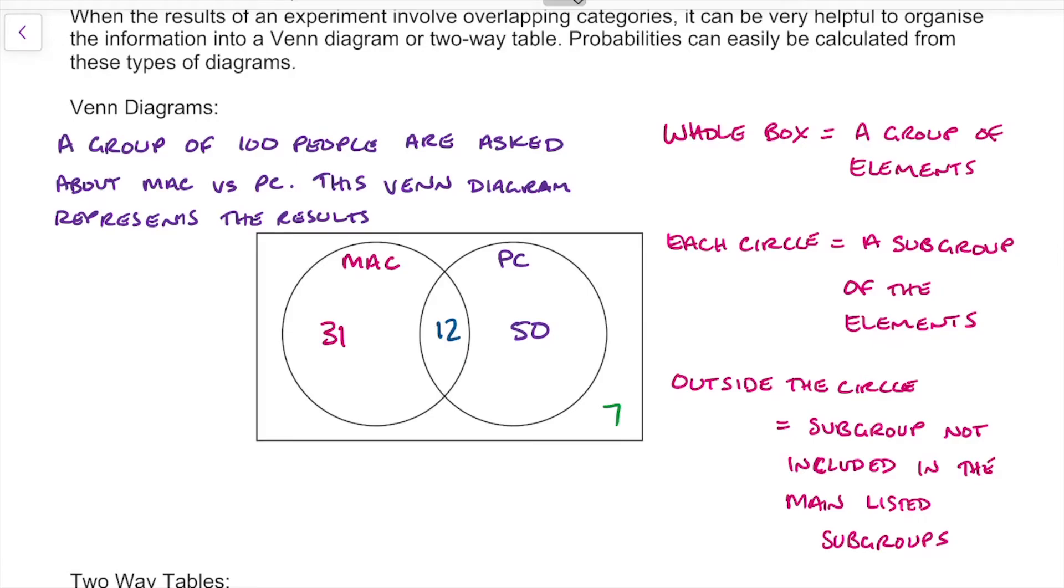I guess they may have been either Chromebook users or they like using pen and paper. Now to make sure that this all adds up correctly, we just get the sum of these four numbers. And we add up to 100. And that's how a Venn diagram will work.